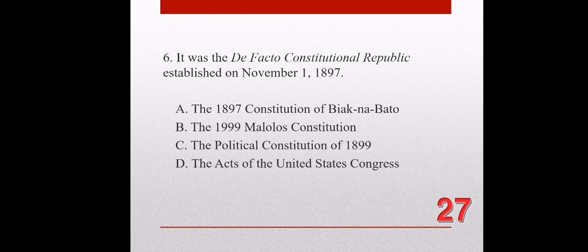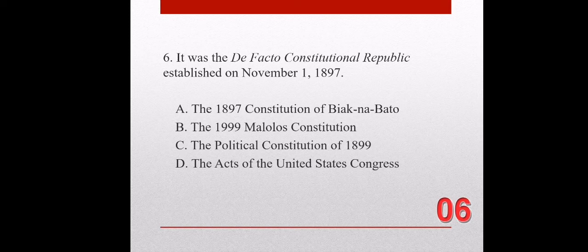Question number six. It was the de facto constitutional republic established on November 1, 1897. A. The 1897 Constitution of Biak-na-Bato. B. The 1899 Malolos Constitution. C. The Political Constitution of 1899. D. The Acts of the United States Congress. The correct answer is letter A, The 1897 Constitution of Biak-na-Bato.